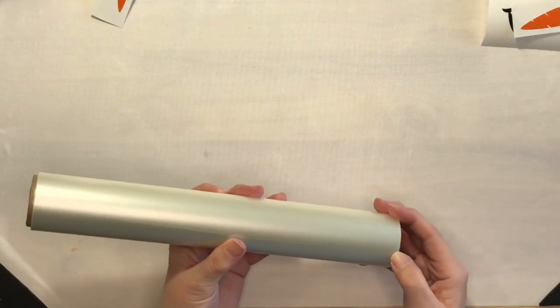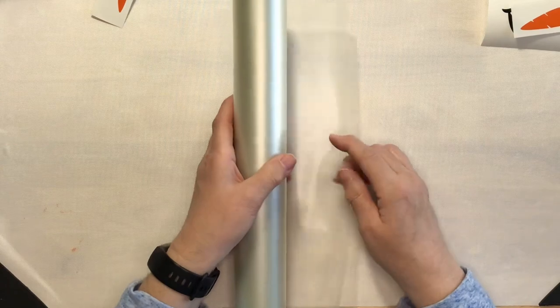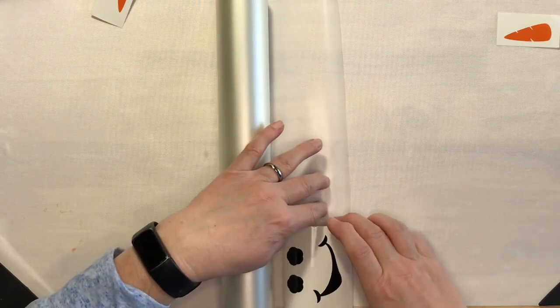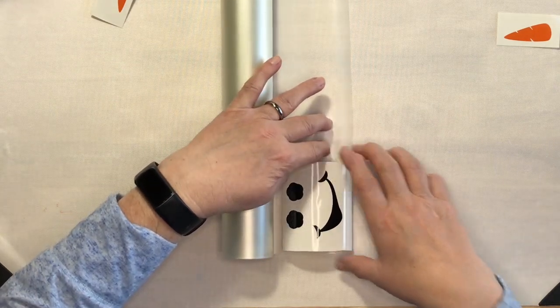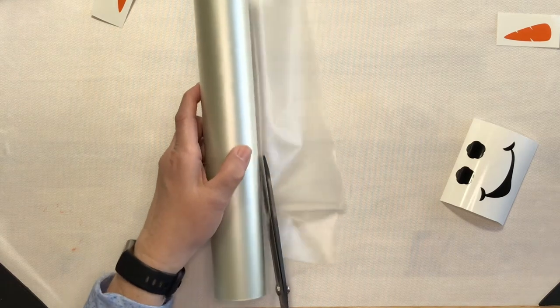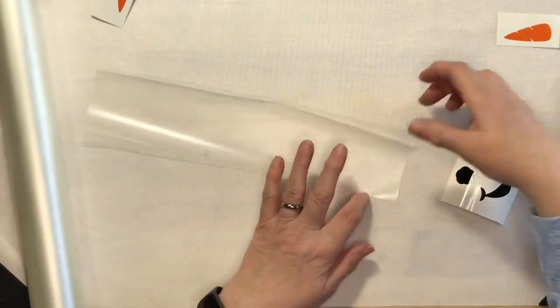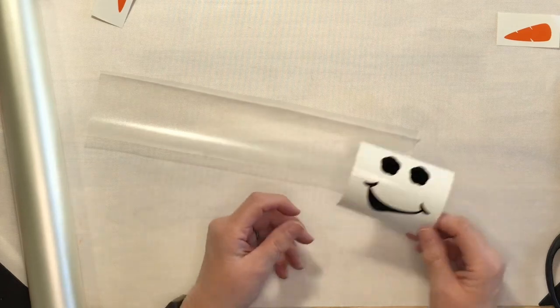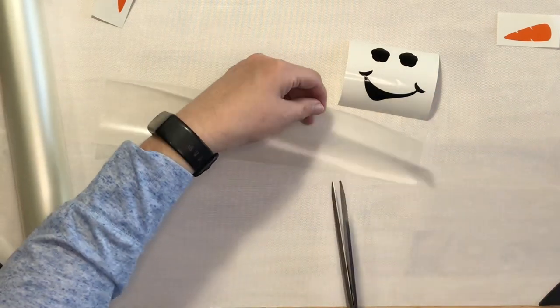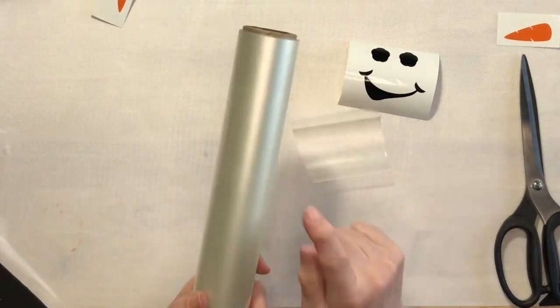As always, I am going to be using medium tack transfer tape, also from 143 vinyl. Now I don't need a very large piece, just wide enough to get the entire face on there. So I'll just kind of measure it out and then cut it down. Now I'm not going to be wasting this. I'm only going to be doing one ornament at a time. So I will cut a piece and just work with that. And then the rest of it I will put back on my roll and it will be ready for the next small project.